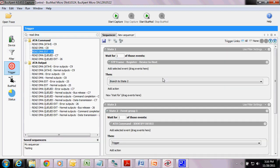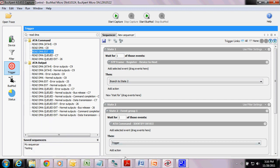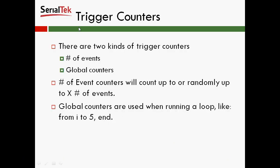Next, we're going to look at using counters and the difference between an event counter and a live counter. There are two kinds of trigger counters: number of events that have occurred, and global counters. The number of event counters will count up to X number of events. Global counters are used when running a loop — like from i to 5 end. So for example, look for Read DMA five times and then trigger the analyzer. Let me show you in the software.